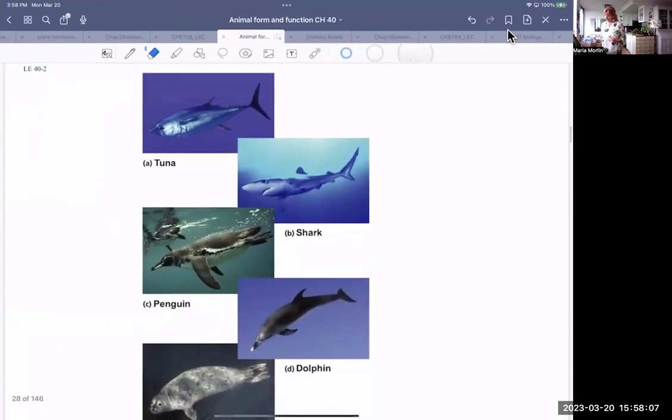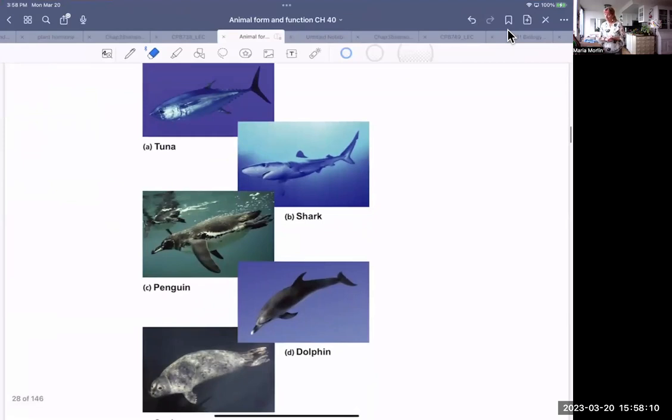Well, here's a good example of adaptations depending on the environment between very different animals. Here's a tuna fish, a tuna, a shark. So a fish, shark is a fish, a penguin, a bird, a dolphin, a mammal, and a seal, a mammal. What do you notice about their body shape? So they all have very particular body shapes for swimming, even though they're not all fishes. There are birds, fishes, and mammals.